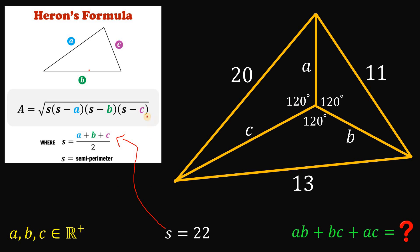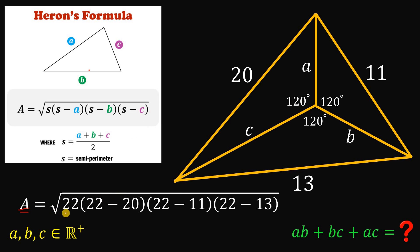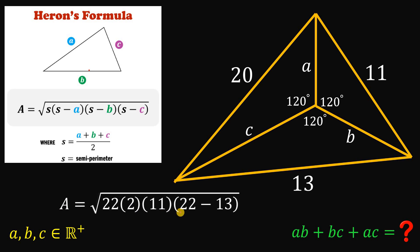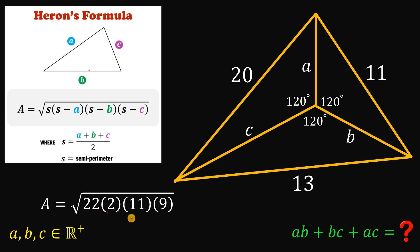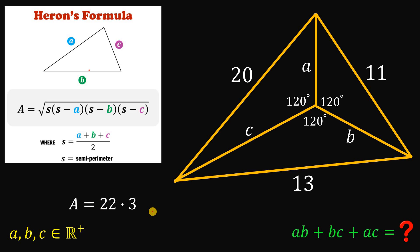Using Heron's formula, the area equals the square root of 22 times (22 minus 20) times (22 minus 11) times (22 minus 13), which is the square root of 22 times 2 times 11 times 9. Notice that 2 times 11 equals 22, so we have 22 squared times 9, and 9 equals 3 squared. Therefore the square root of 22 squared times 3 squared equals 22 times 3, which gives us 66. That is the area of this triangle.